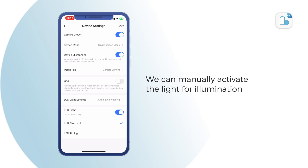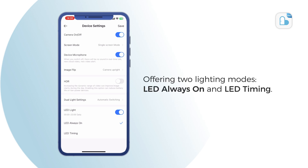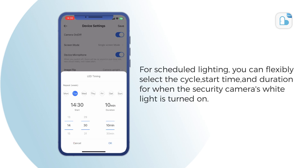We can manually activate the light for illumination, offering two lighting modes: LED always on and LED timing. For scheduled lighting, you can flexibly select the cycle, start time, and duration for when the security camera's white light is turned on.